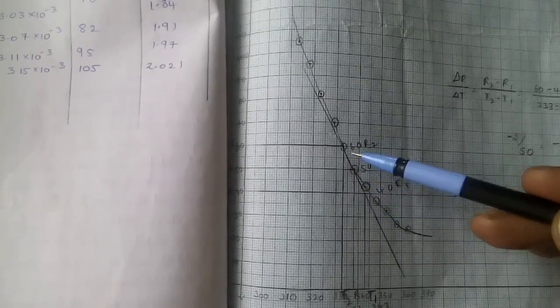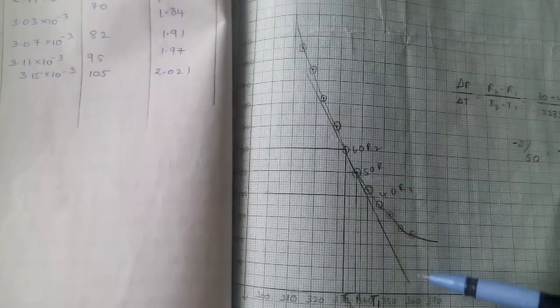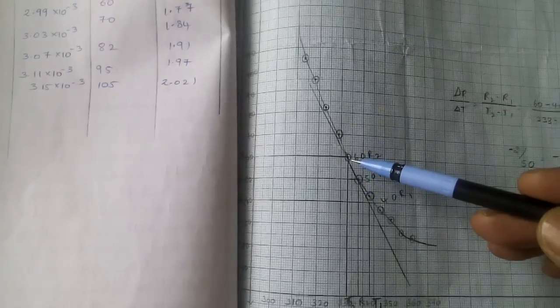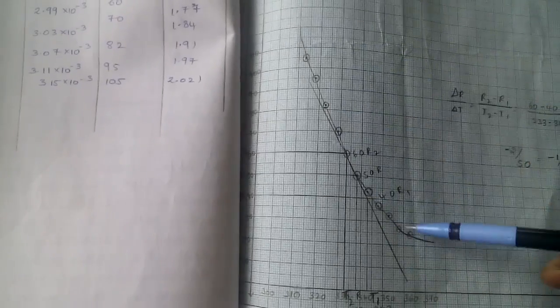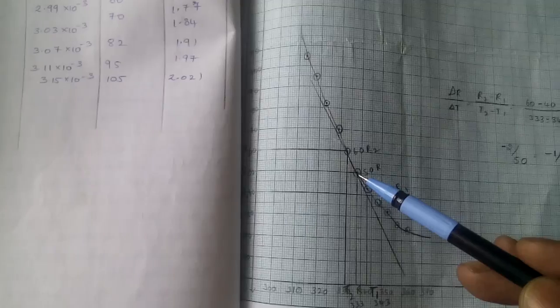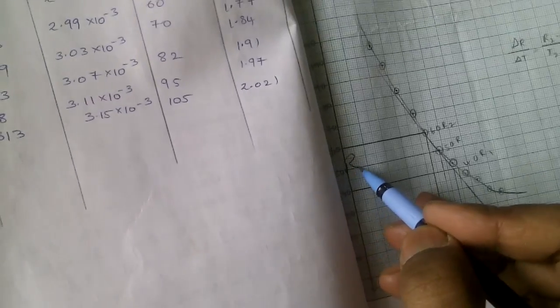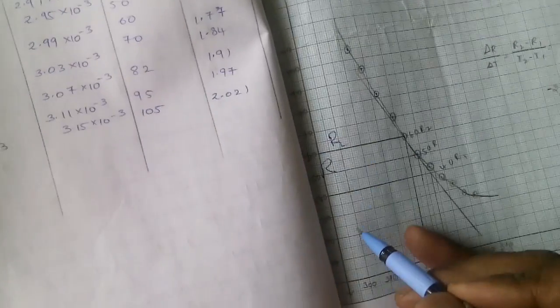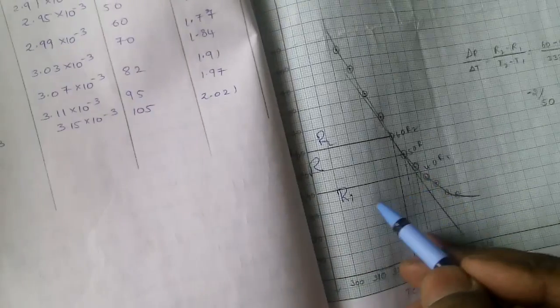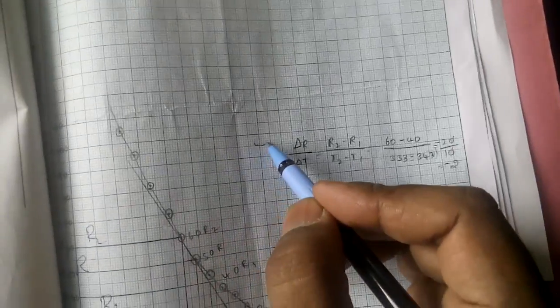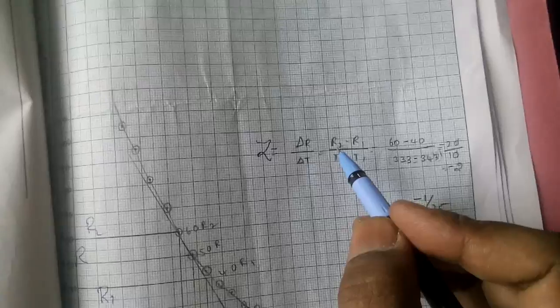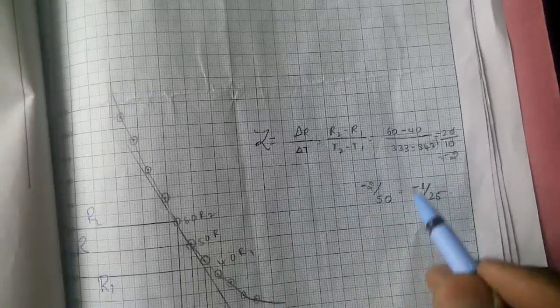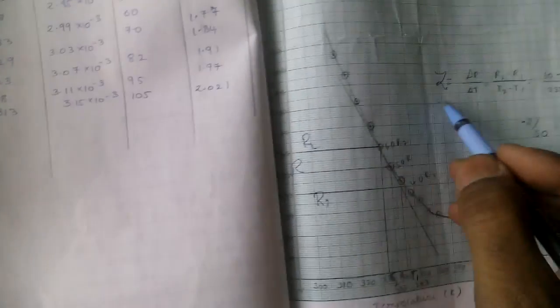For graph 1 (temperature vs resistance), the points form a curve. Take any one curved point on the graph — this is taken as R. Draw a normal tangent line at that point. Take another point on the line called R2 and another point called R1, with corresponding temperatures T2 and T1. Substitute into the formula: alpha equals delta R over delta T, which is R2 minus R1 divided by T2 minus T1. Calculate alpha from this.